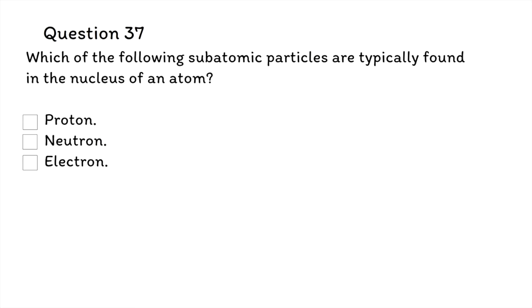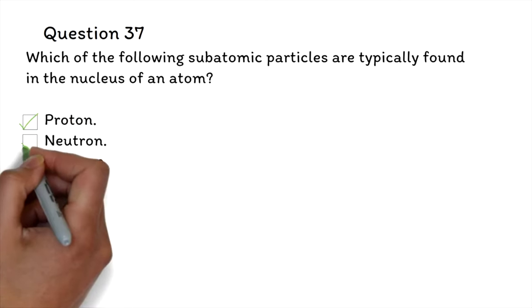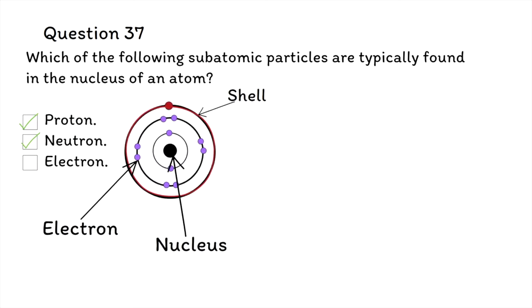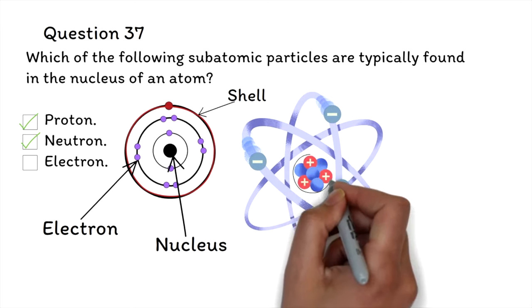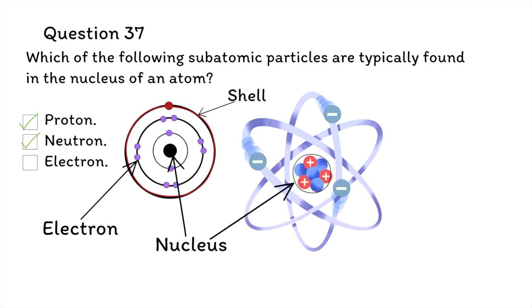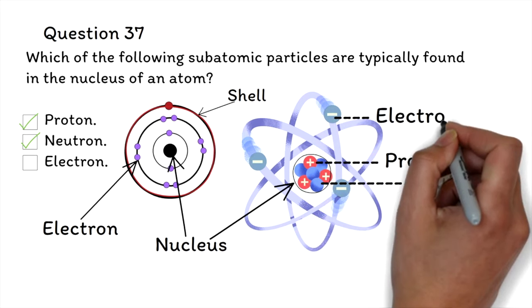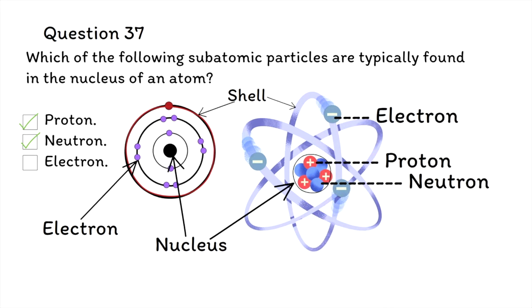Question 37: Which of the following subatomic particles are typically found in the nucleus of an atom? Proton, Neutron, or Electron? The correct answer is proton and neutron. Both protons and neutrons are typically found in the nucleus of an atom. Protons have a positive charge, while neutrons have no charge — they are neutral. Electrons are not found in the nucleus but orbit around it in energy levels or shells.